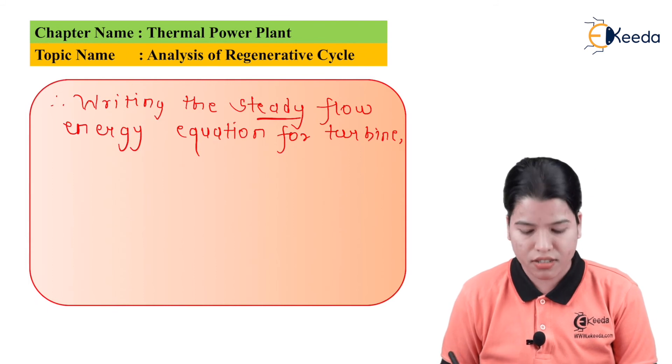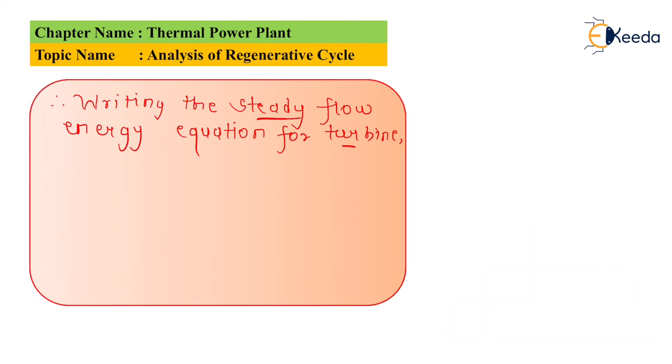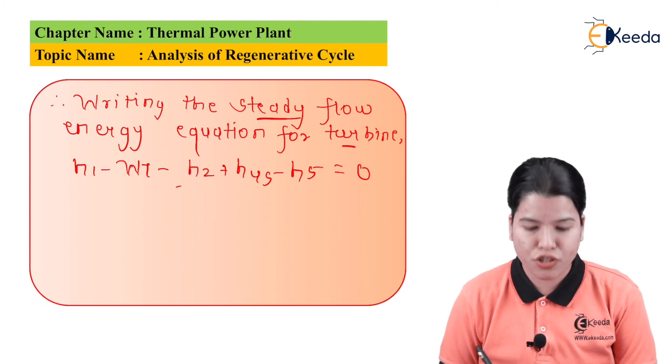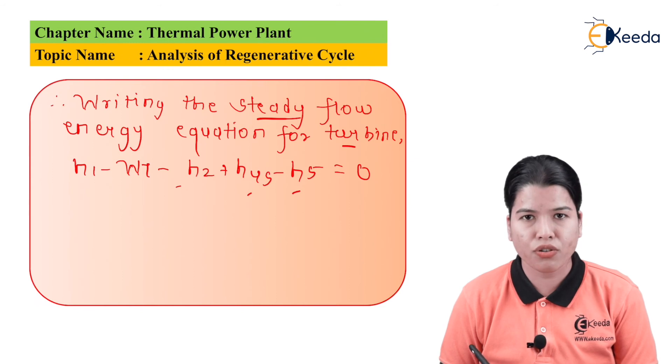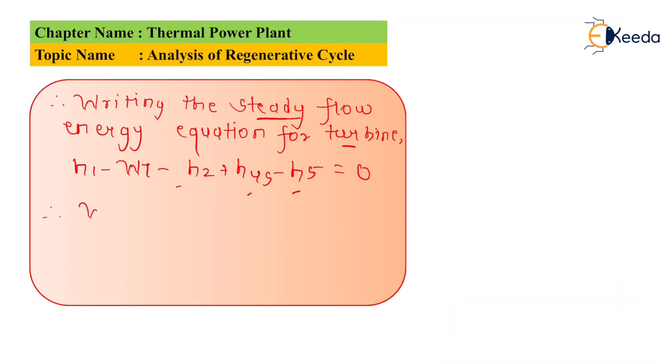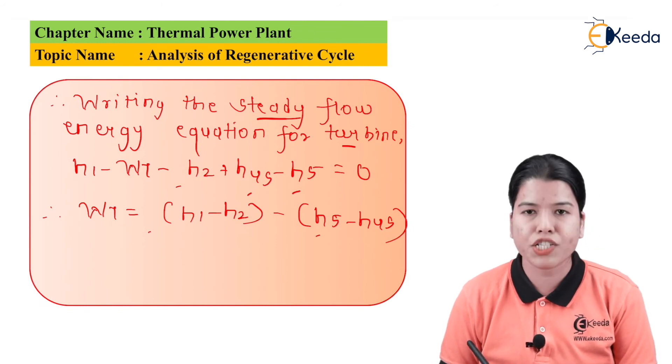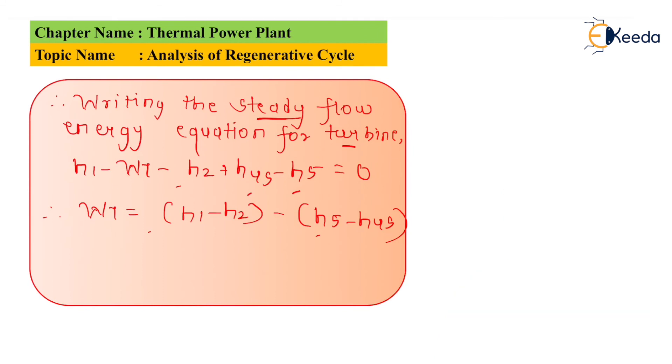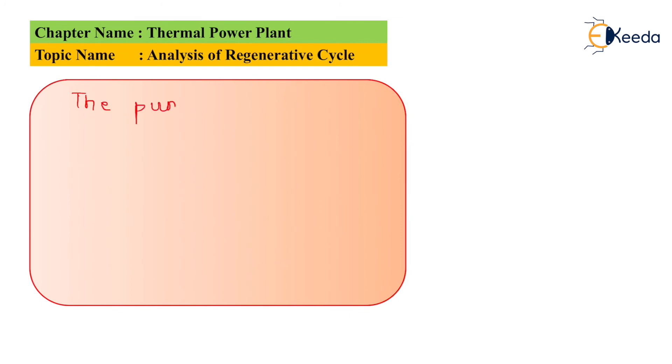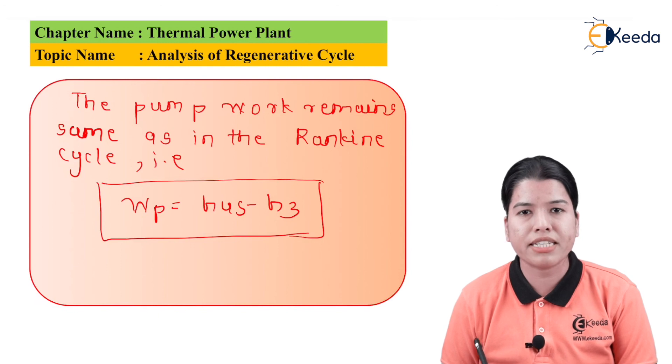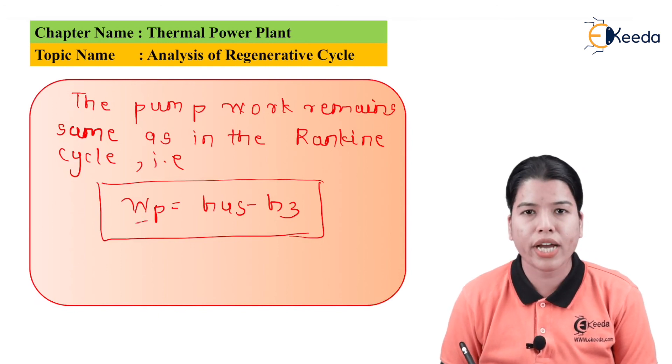Hence, if we write the steady flow energy equation for the turbine we get: H1 minus W_t minus H2 plus H4s minus H5 equals 0, which can be further modified as W_t equals (H1 minus H2) minus (H5 minus H4s). Further, it can be simplified. But the pump work in case of regenerative cycle will remain same as in case of Rankine cycle. Hence, W_p equals H4s minus H3.